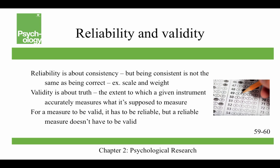Reliability is all about consistency, but being consistent is not the same as being correct. For example, I weigh 180 pounds, but I may get on a scale that consistently says I weigh 130 pounds. That scale is reliable because it gives me the same weight over and over again, but it's not valid. Validity is all about truth — the extent to which a given instrument accurately measures what it's supposed to measure. For a measure to be valid it has to be reliable, but a reliable measure doesn't have to be valid. A legitimate question to ask is: do the ACT and SAT correctly measure scholastic aptitude? Are they reliable and valid measures?